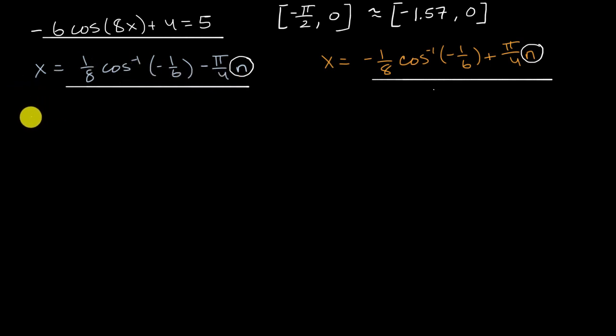So this could be rewritten as x is approximately—if you were to take one-eighth times the inverse cosine of negative one-sixth, I encourage you to verify this on your own on a calculator. You would get that that's approximately 0.22. And then pi over four is approximately 0.785. So this expression would be approximately 0.22 minus 0.785 times n, where n could be any integer.